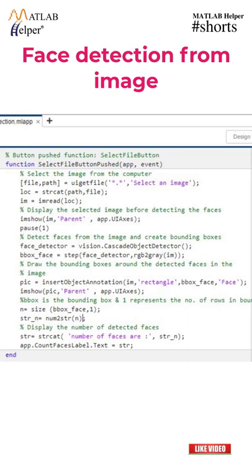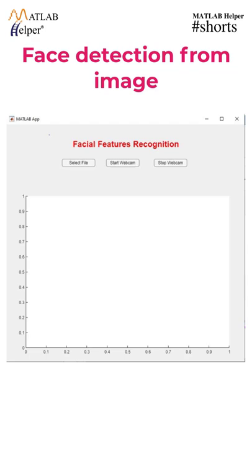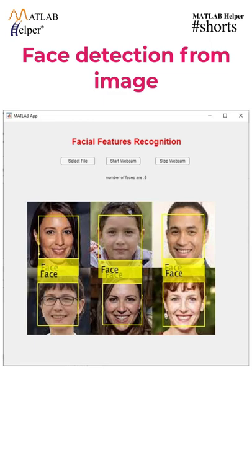The Cascade Object Detector Framework is used to detect the faces and features, which uses the Viola-Jones algorithm. To detect the faces on an image, click on Select Image, and the selected image is displayed with the detected faces, and the number of faces detected is displayed.